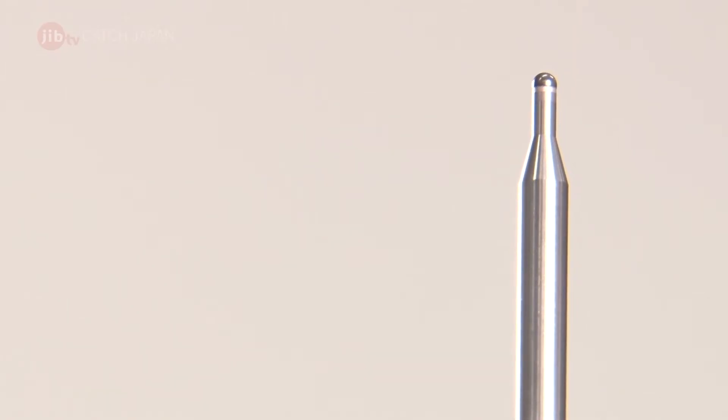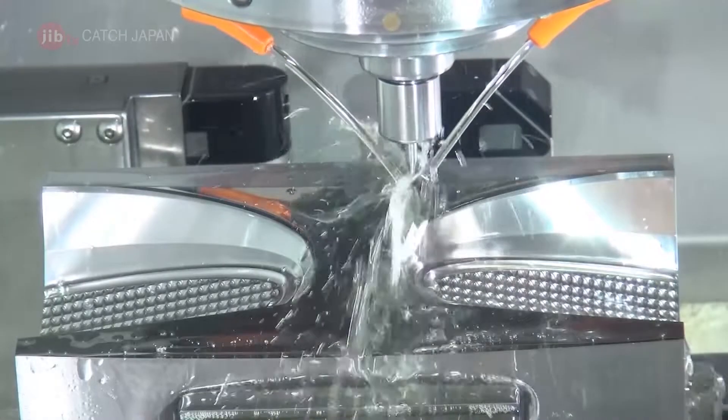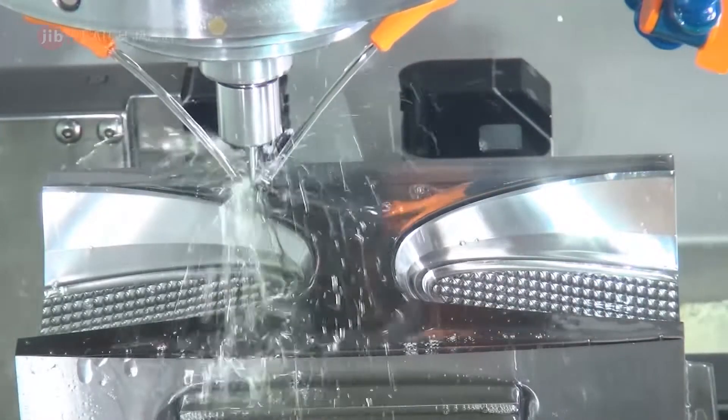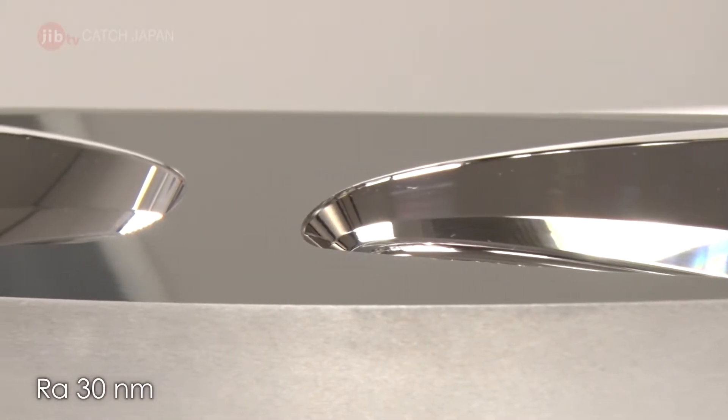A standout among even their specialized end mills is this one. Using it to process metal makes surfaces free of nearly all unevenness, giving it an almost mirror-like quality.